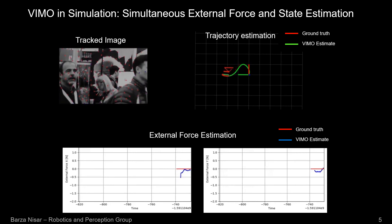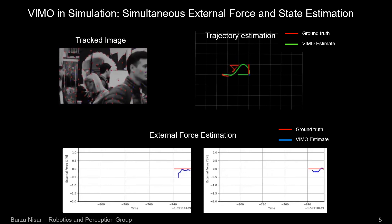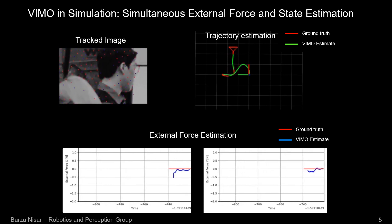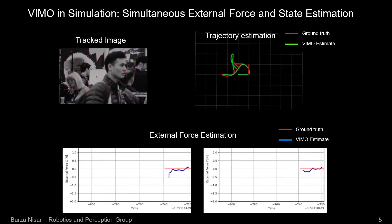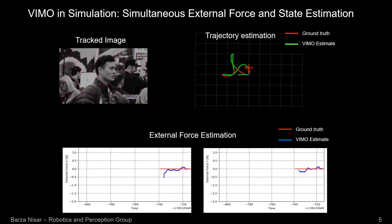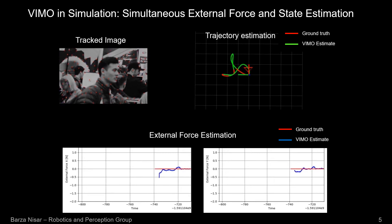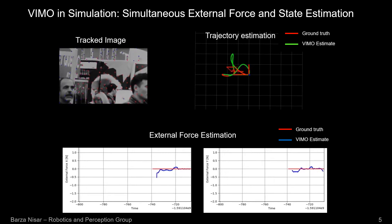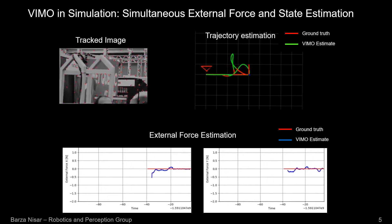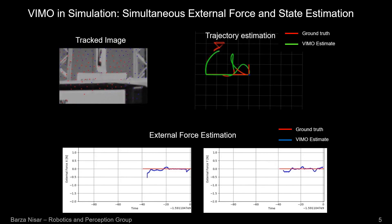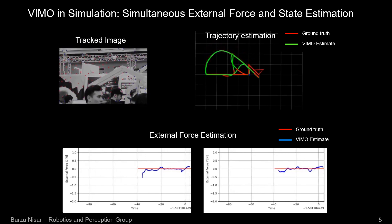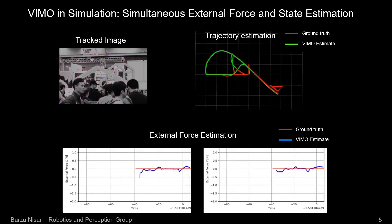In this video, we show WEMO running in simulation on a quadrotor in Gazebo using the RotorS simulator. On the top right, we see the position trajectory estimated by WEMO plotted against the ground truth. On the bottom, the two graphs show WEMO's external force estimates in body x and y axes respectively against the ground truth.